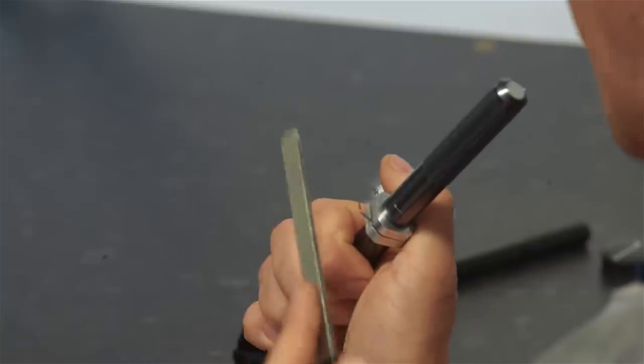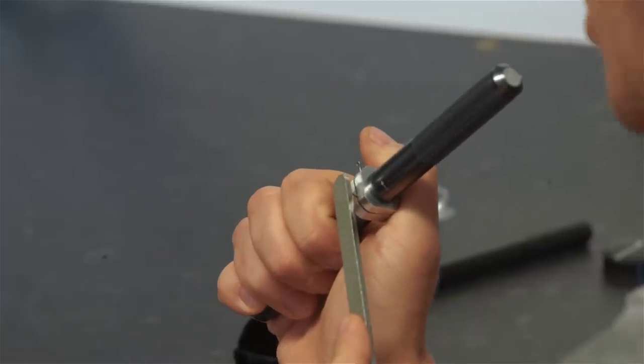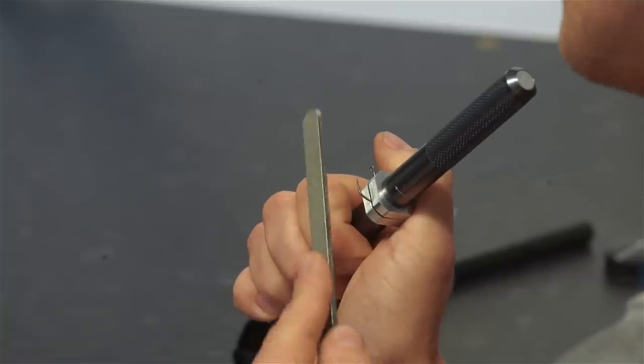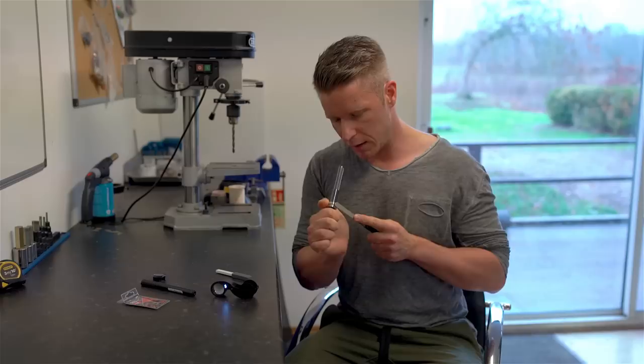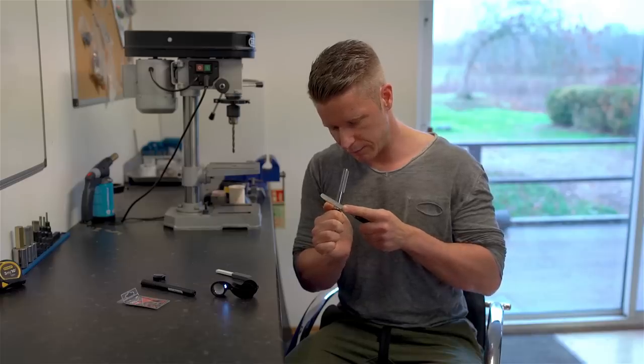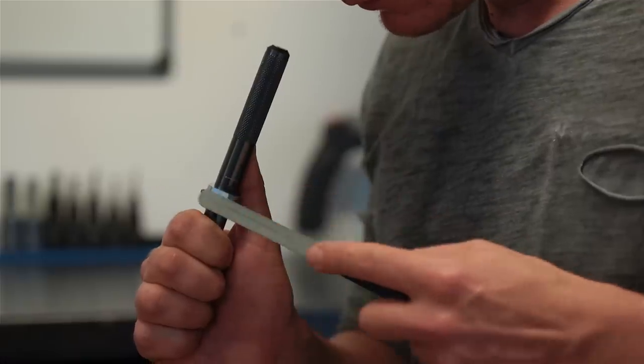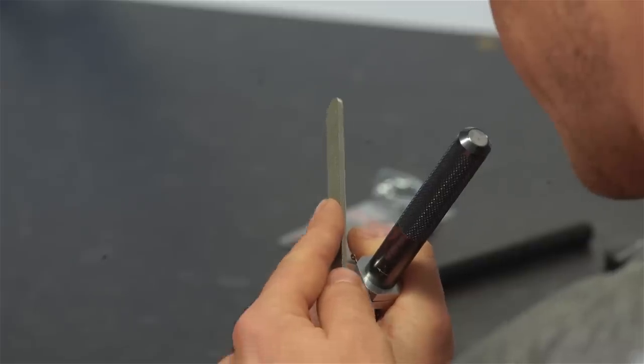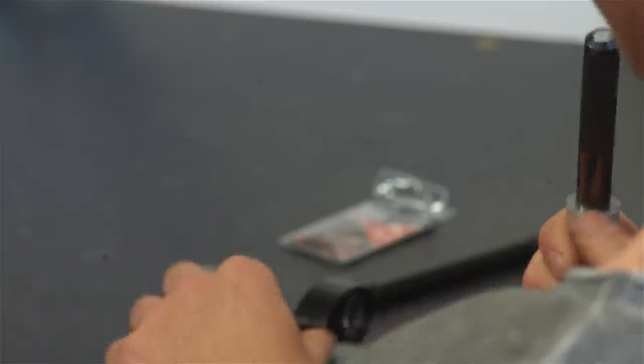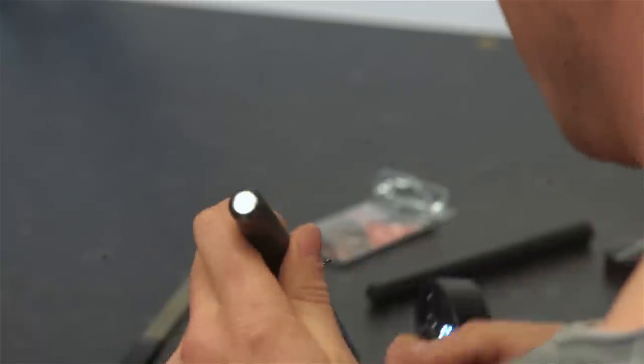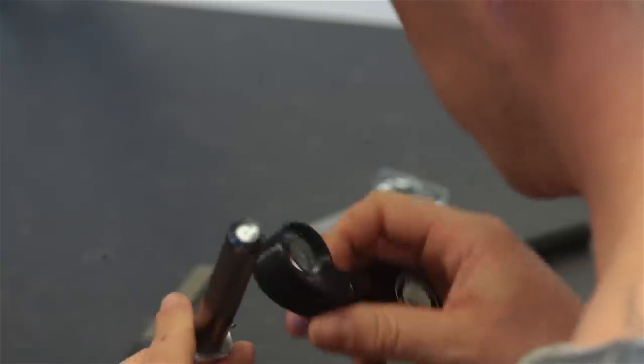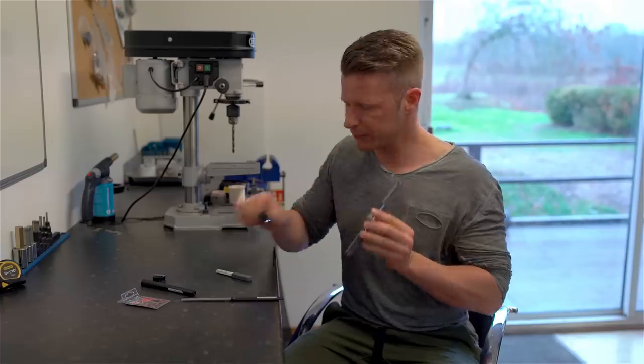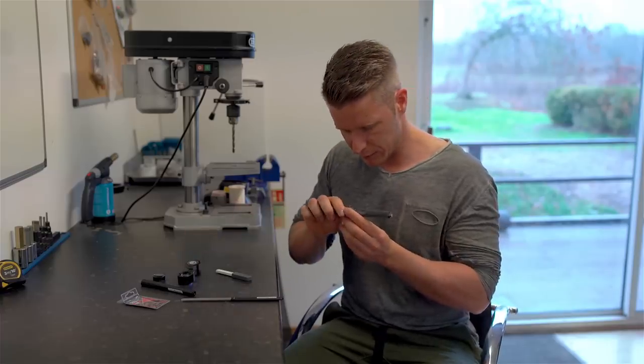I place the file at around the barb and will follow the whole contour of the hook and just gently follow it. And after two strokes I check the result. That already looks pretty much perfect.